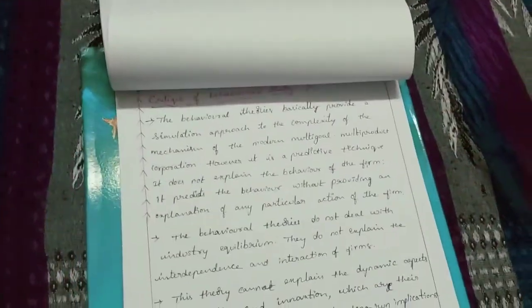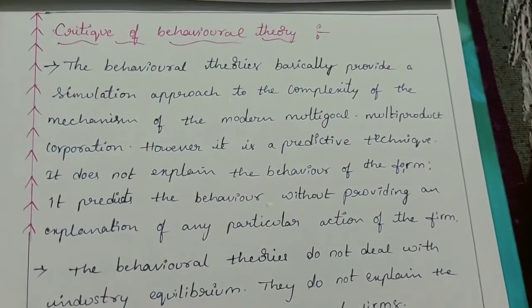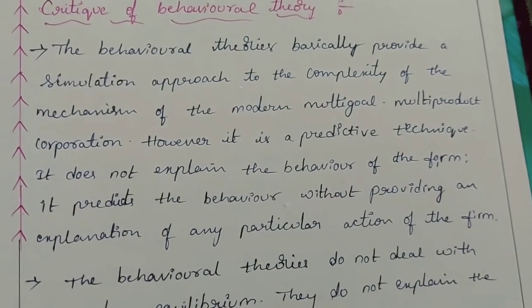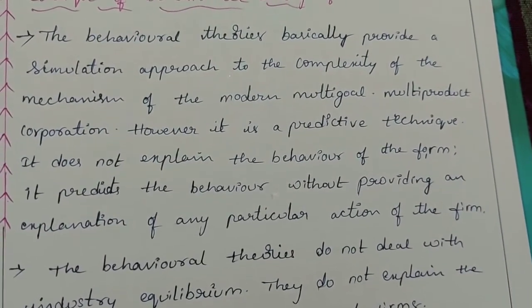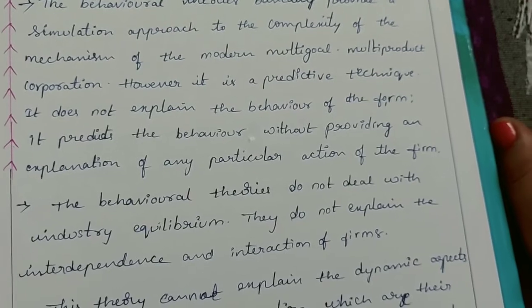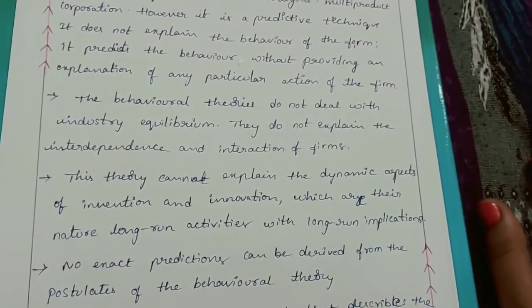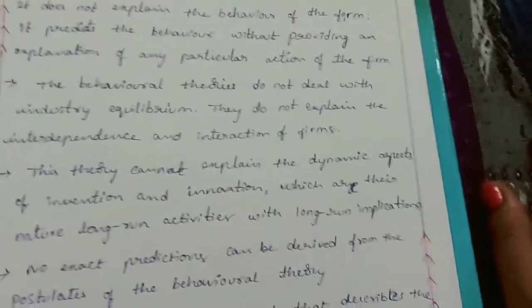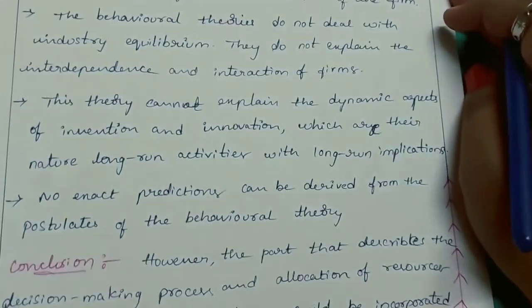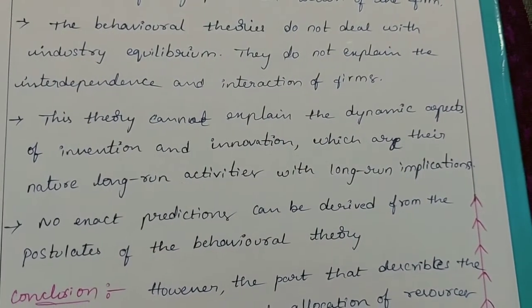Criticism of behavioral theory: The behavioral theories basically provide a simulation approach to the complexity of the mechanism of the modern multi-goal or multi-product corporation. However, it is a predictive technique — it doesn't fully explain the behavior of the firm; it predicts behavior without providing an explanation of any particular action. The behavioral theories do not deal with industry equilibrium, and they do not explain the interdependence and interaction of firms. This theory cannot explain the dynamic aspects of invention and innovation, which are long-run activities. No exact predictions can be derived from the postulates of behavioral theory.